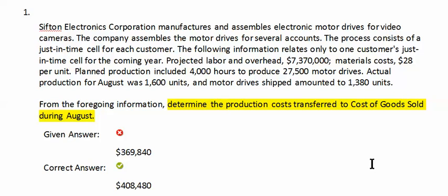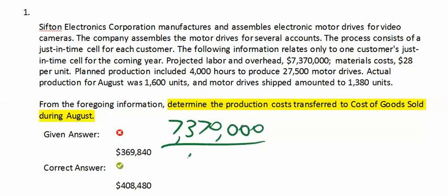We have to figure out how to apply our conversion costs. Since they're giving us the number of units produced and the number of units shipped, we'll use units as the activity driver for the conversion costs. I'm going to take the $7,370,000 and divide that by 27,500 units to apply my conversion costs.